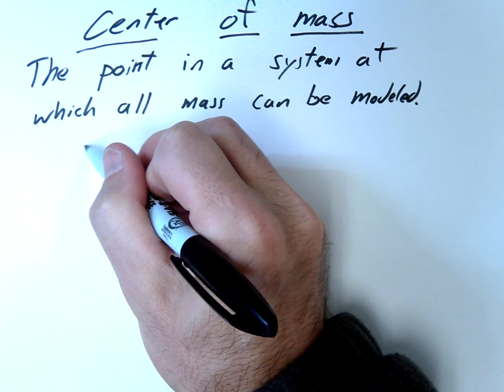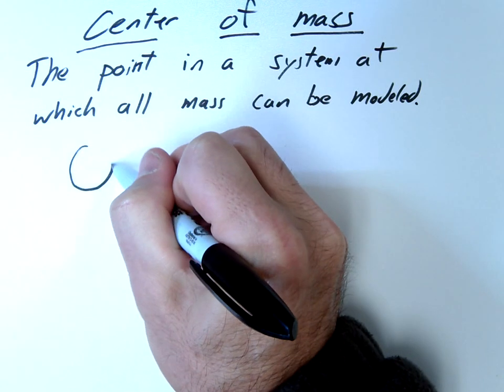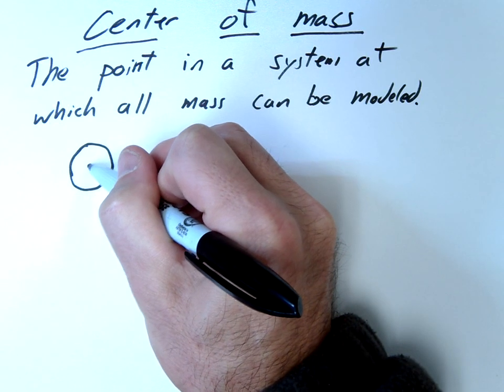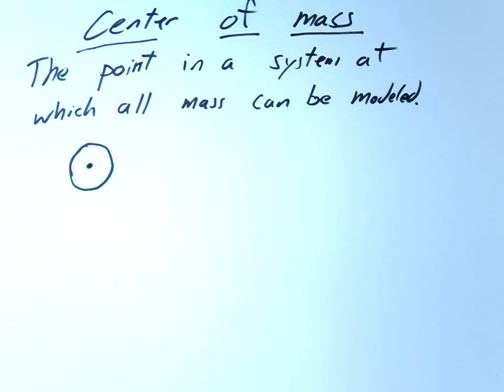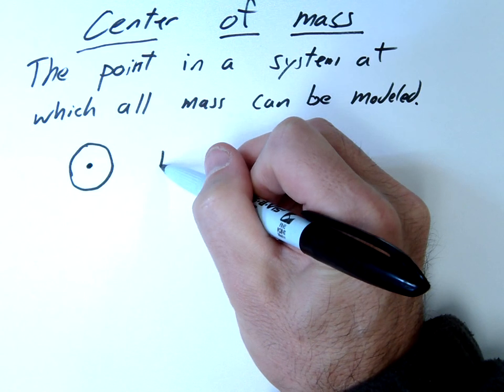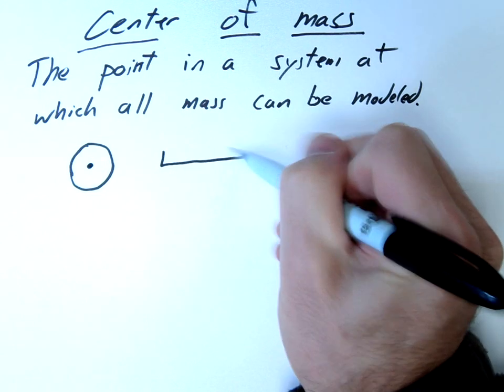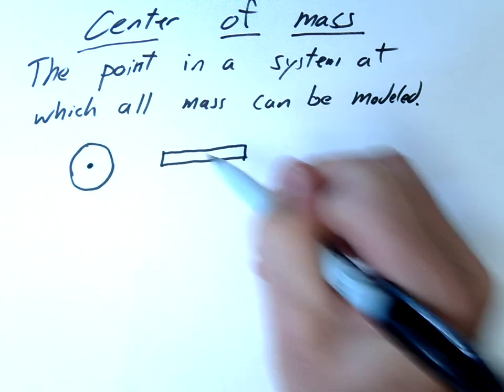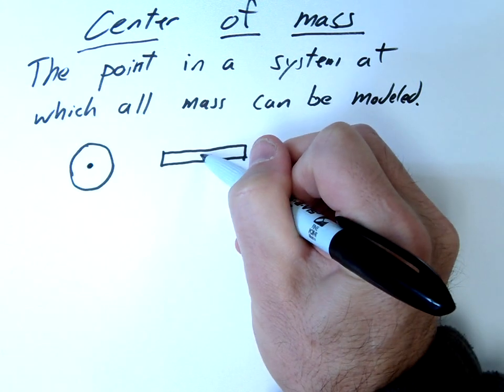For example, if my system is a simple ball, let's say it's uniform in mass all the way around, our center of mass would be the exact center of the ball. Let's imagine we had a stick, like a ruler, and again let's say the mass is uniform. In this case, the center of mass would be right in the center.